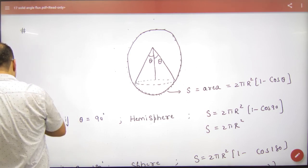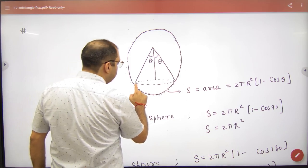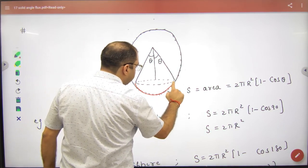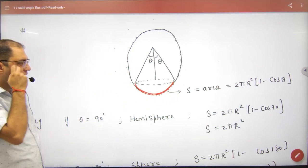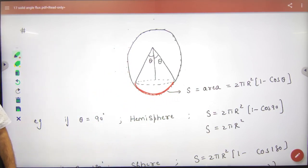But only this portion of the surface area will be 2πr²(1 - cosθ). Clear?